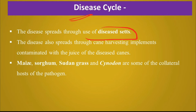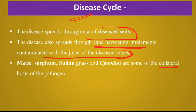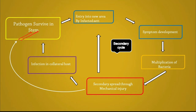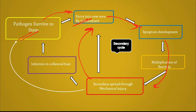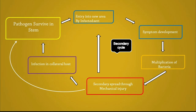Disease cycle: the disease is spread through use of diseased sets. It also spreads from plant to plant via cane harvesting implements contaminated with juice of diseased cane. The pathogen can survive in collateral hosts like maize, sorghum, Sudan grass, and Cynodon. The pathogen survives in infected stems. When infected planting material is used, it enters the field and multiplies in plants. During intercultural operations causing mechanical injury, bacteria transfer from infected to healthy plants. When the crop matures, the pathogen survives in nearby weed or collateral hosts.